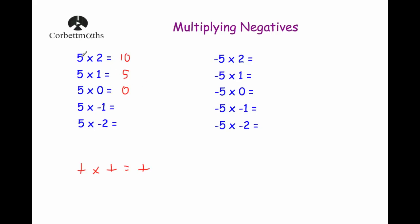Now if we have a look at the pattern, we've got 5 times 2, 5 times 1, 5 times 0, 5 times negative 1, and 5 times negative 2. Each time we're just having one less lot of 5. And if we look at our answers, we've got 10, 5, 0 — each time getting 5 smaller. So 5 times negative 1 should be equal to negative 5, because it's 5 smaller.